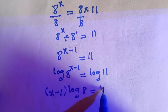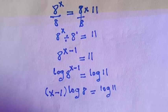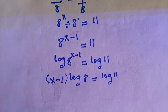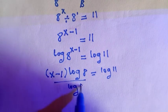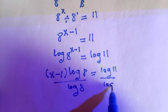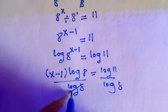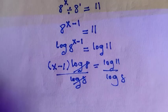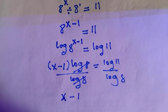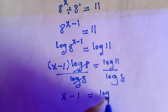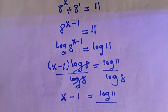And by dividing both sides by log 8, we are going to have these two cancelled. Then it remains x minus 1 equals log 11 divided by log 8.